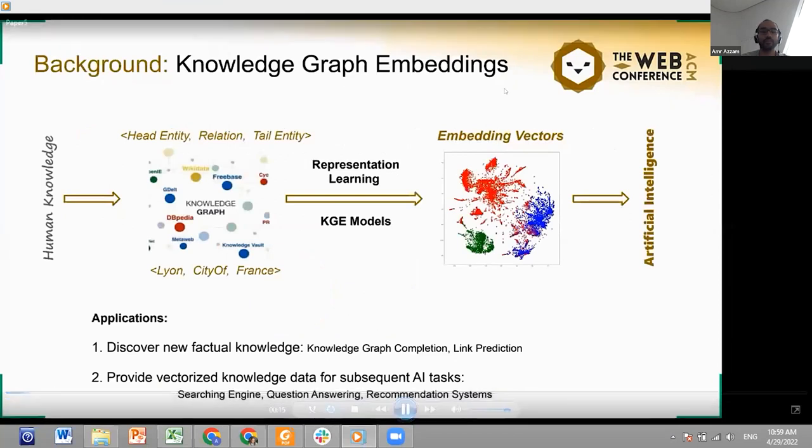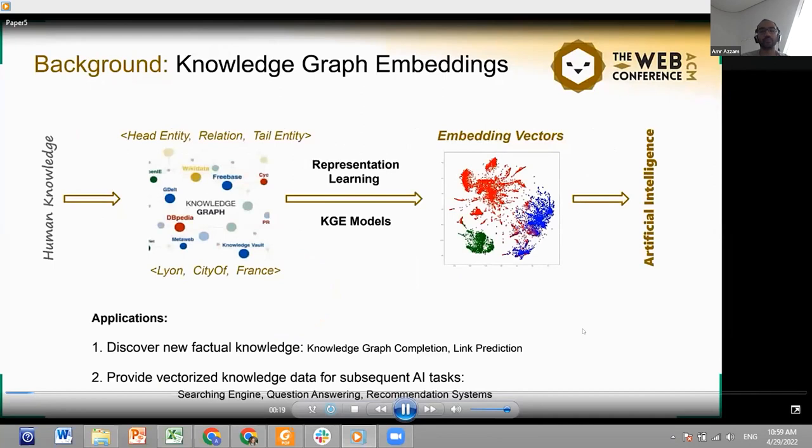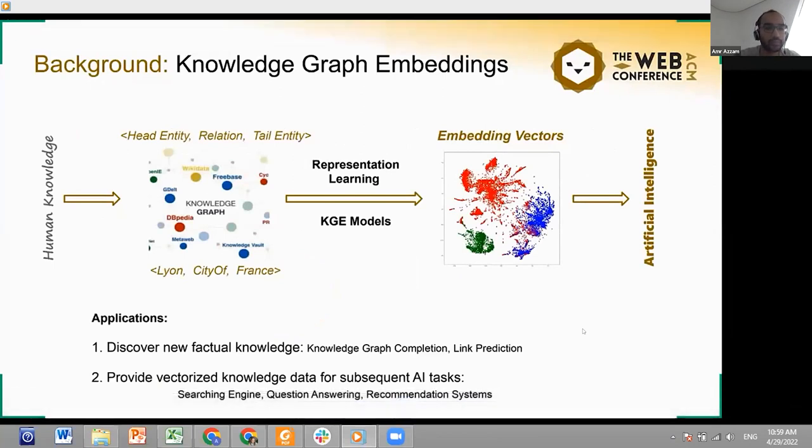The knowledge graph is proposed to describe entities and their relationships existing in human knowledge. We know Lyon is a city in France. In the knowledge graph, it can be recorded as a factual triple in forms of head entity, relation, and tail entity.